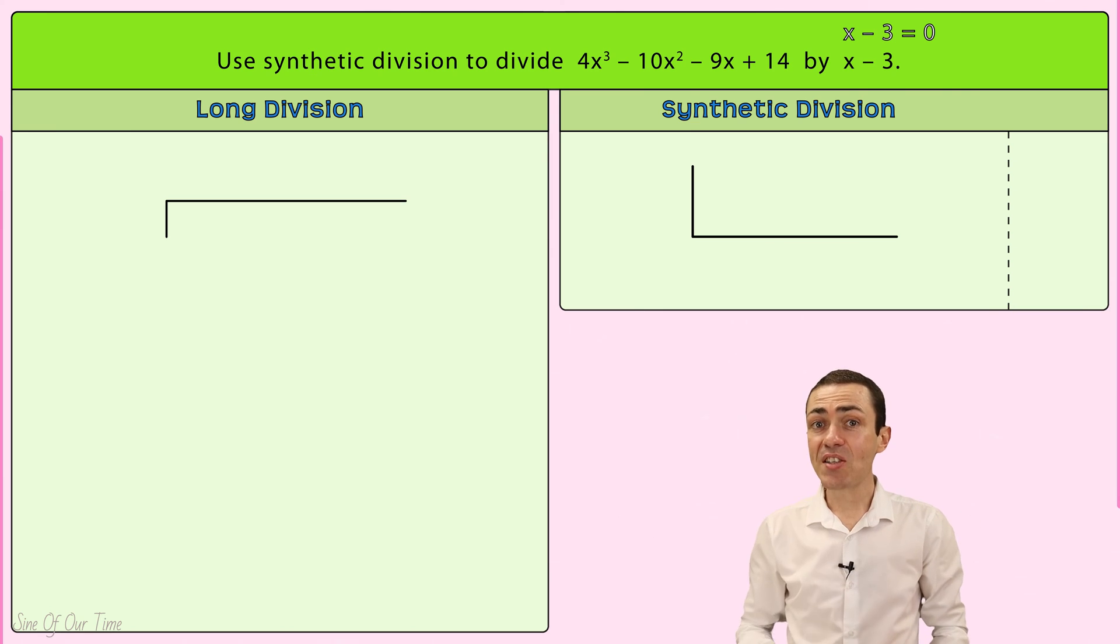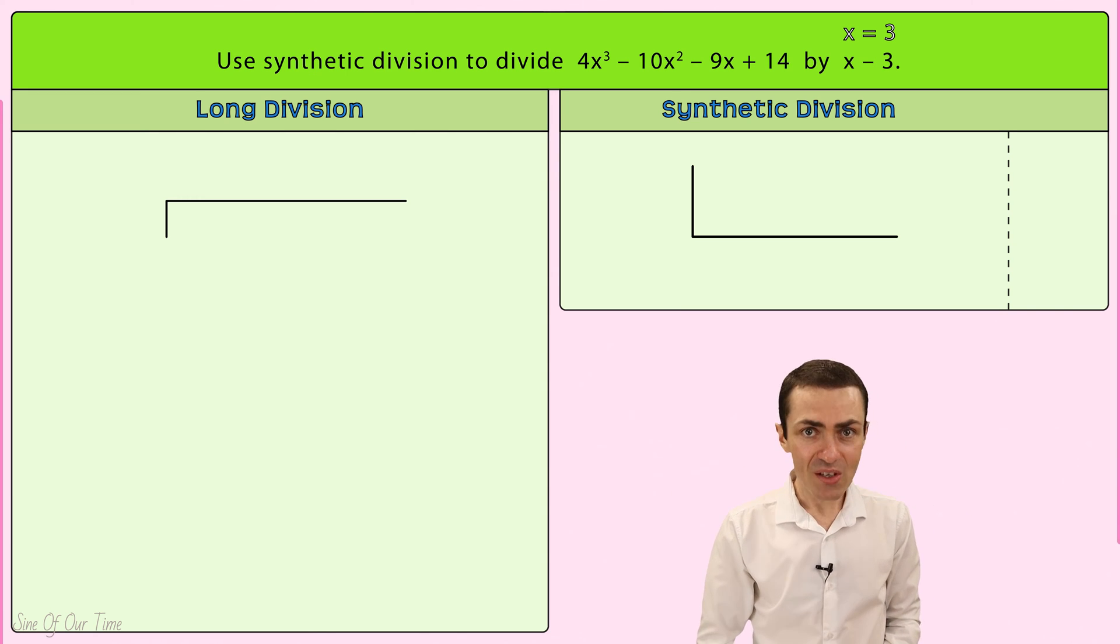Here, the divisor is 0 only when x is equal to positive 3. And so we write positive 3 to the left of the synthetic division symbol.